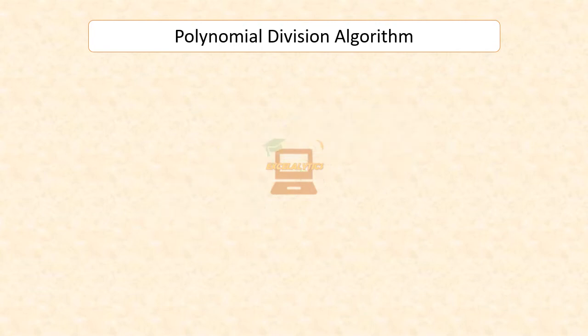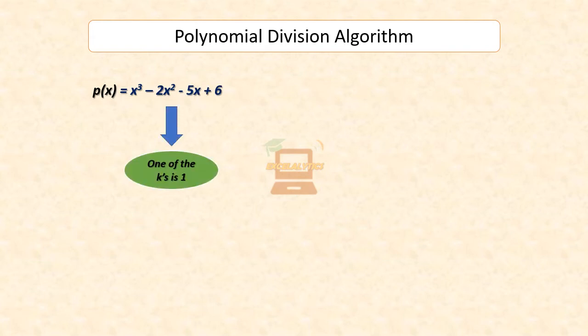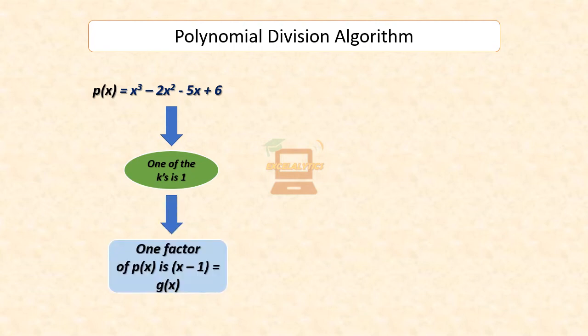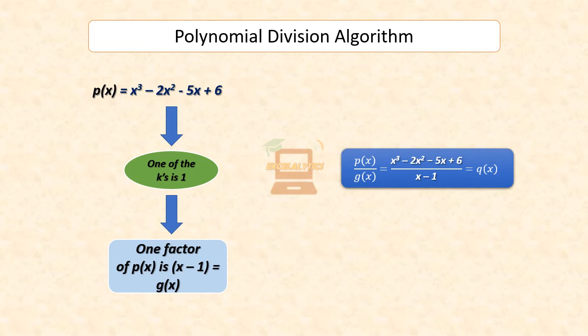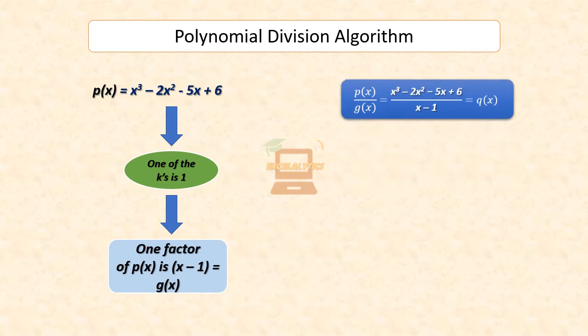For this, let us consider the cubic polynomial x cubed minus 2 times x squared minus 5x plus 6. If you are told that one of its zeros is 1, then you say that x minus 1 is a factor of x cubed minus 2 times x squared minus 5x plus 6. Therefore, you will divide it by x minus 1, which you have learnt in your previous grade, to get the quotient x squared minus x minus 6.